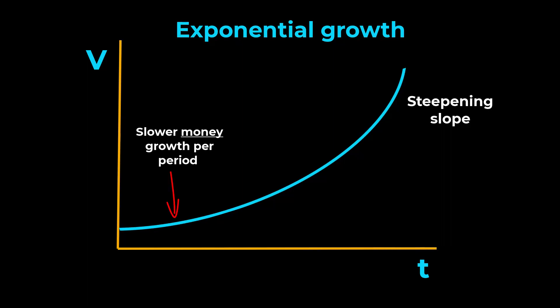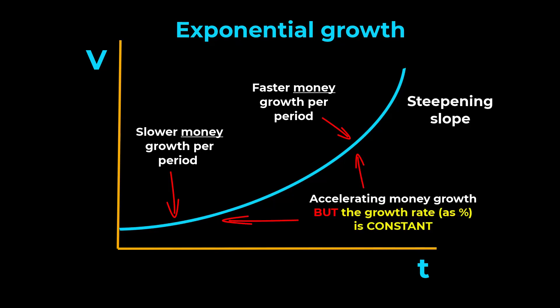So, the money value growth accelerates, but the rate of acceleration in percentage terms is constant. We call this the constant growth rate.